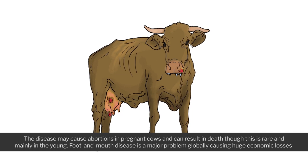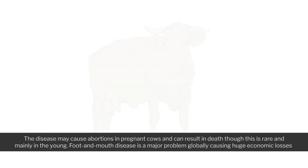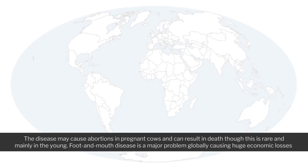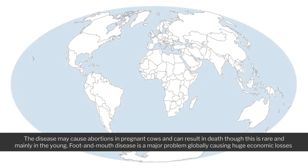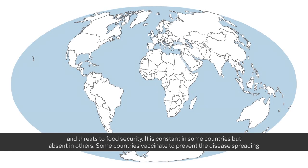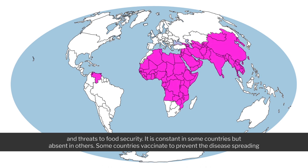The disease may cause abortions in pregnant cows and can result in deaths, though this is rare and mainly in the young. Foot and mouth disease is a major problem globally, causing huge economic losses and threats to food security. It is constant in some countries but absent in others.